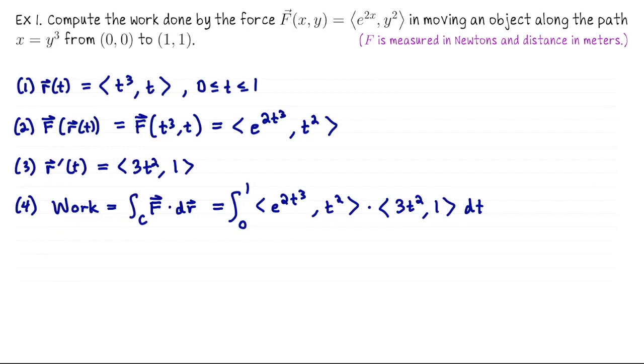Always after you've done a dot product the result is a scalar. So if you feel like you're integrating a vector you're not doing it correctly; you need to take a dot product here and get back a scalar. In particular we're going to integrate from 0 to 1, 3t²e^(2t³) + t² dt.